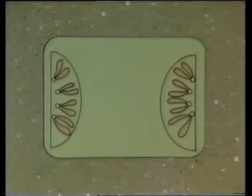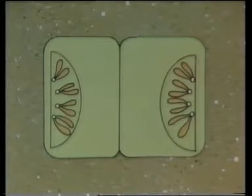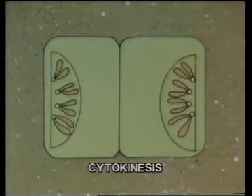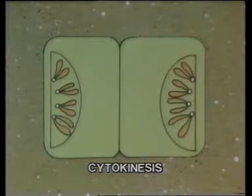In plant cells, a cell wall is formed across the cell, dividing it into two daughter cells. This final process in both animal and plant cells is called cytokinesis. The chromosomes of the daughter nuclei formed by mitosis are identical to those of the original parent nucleus.